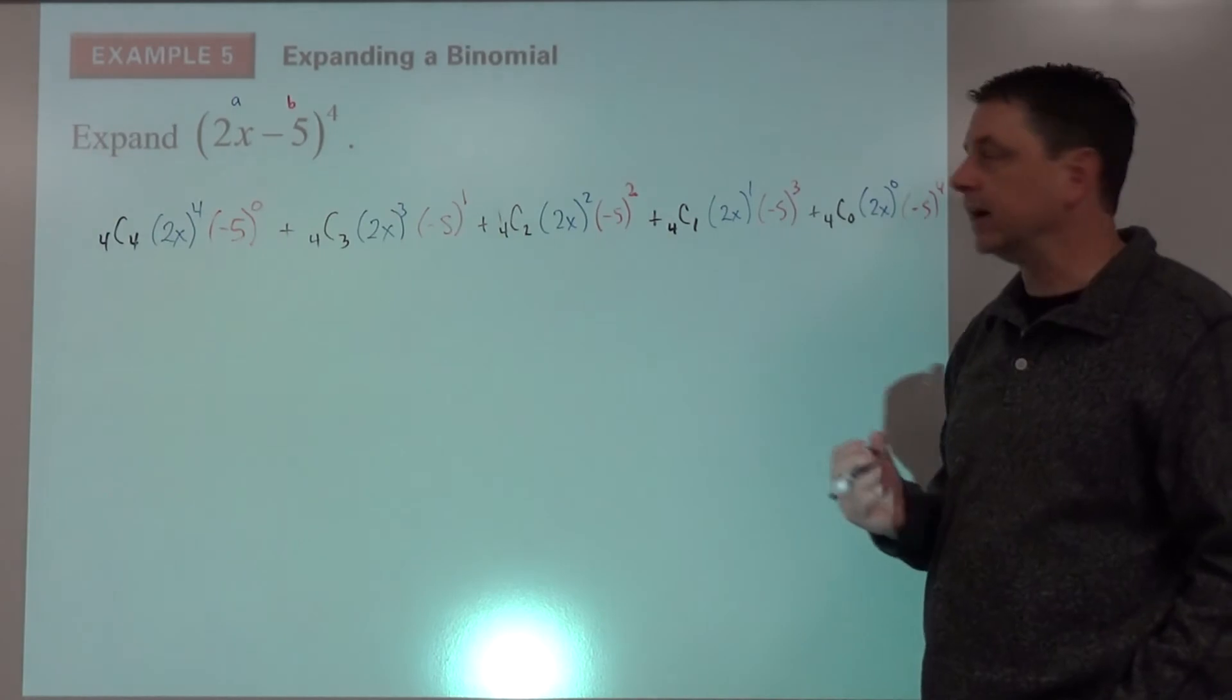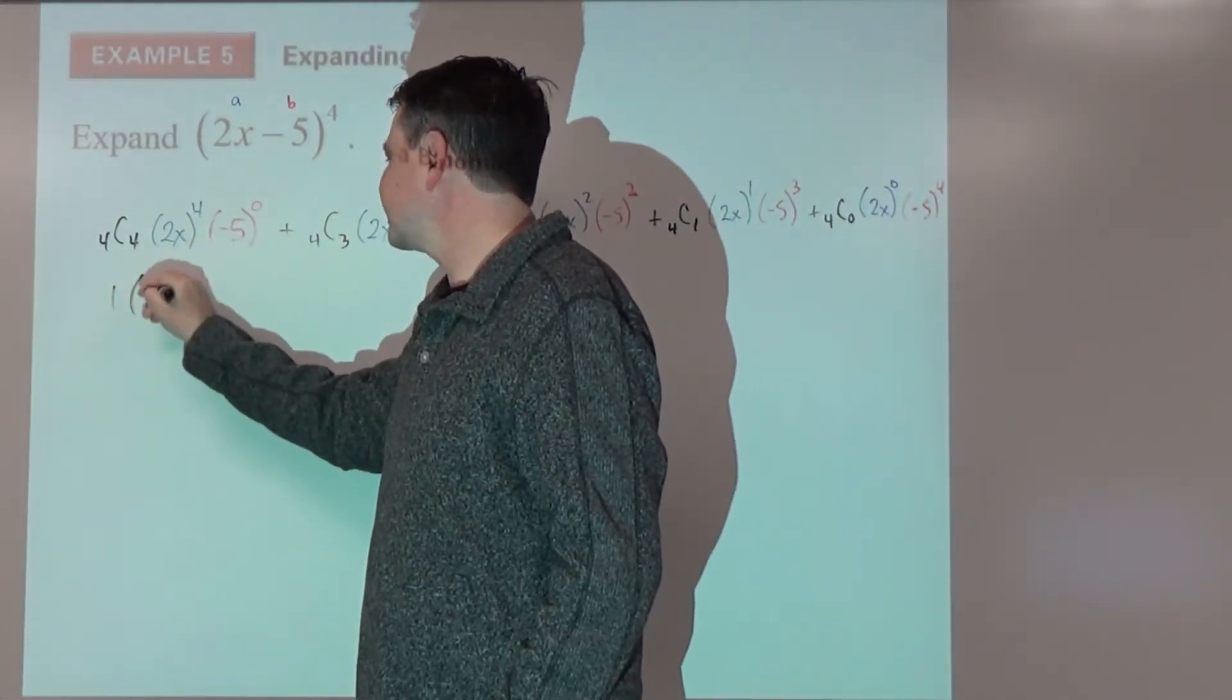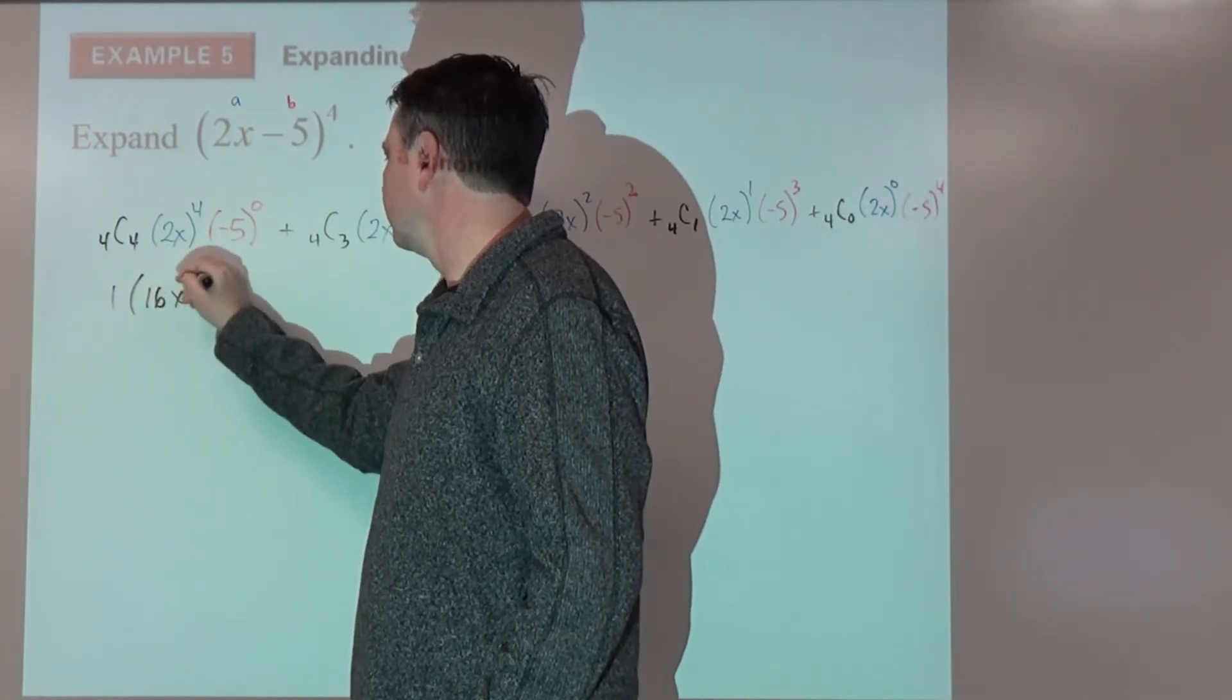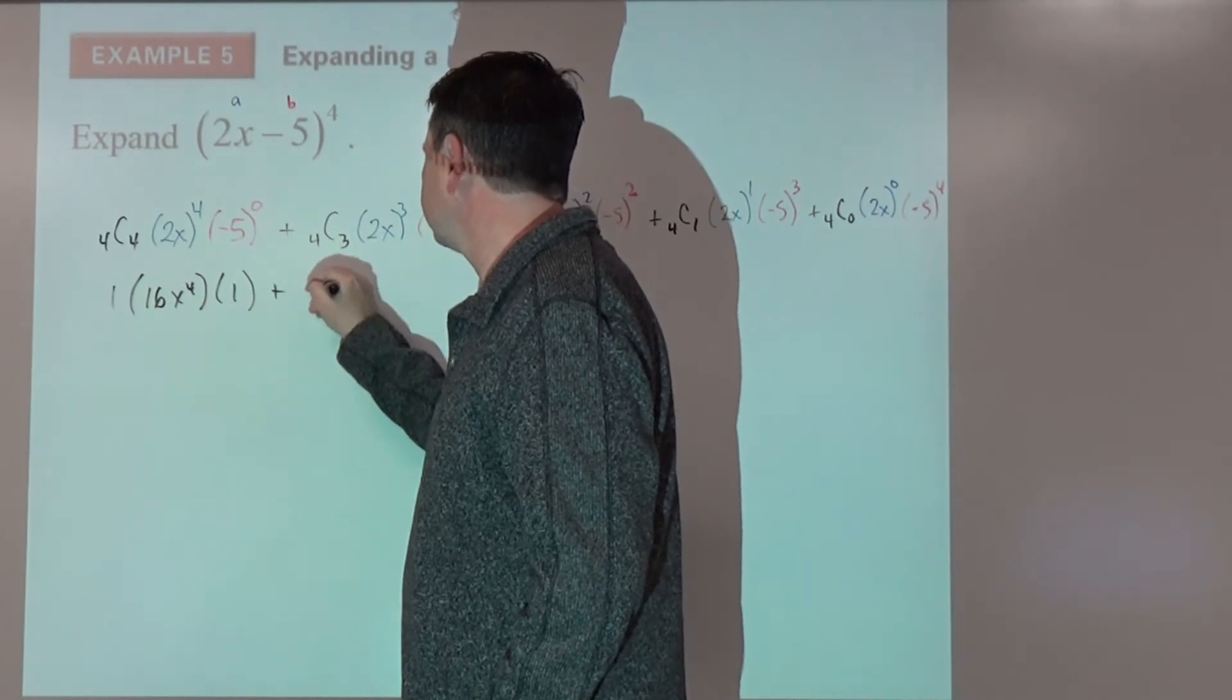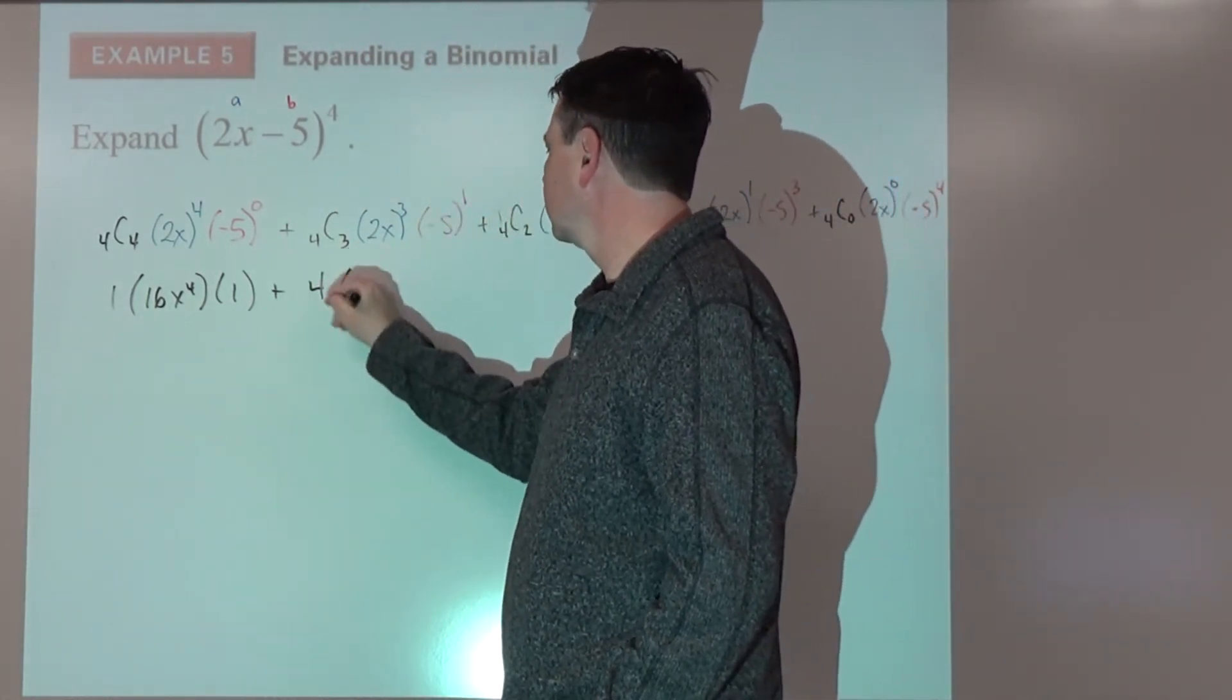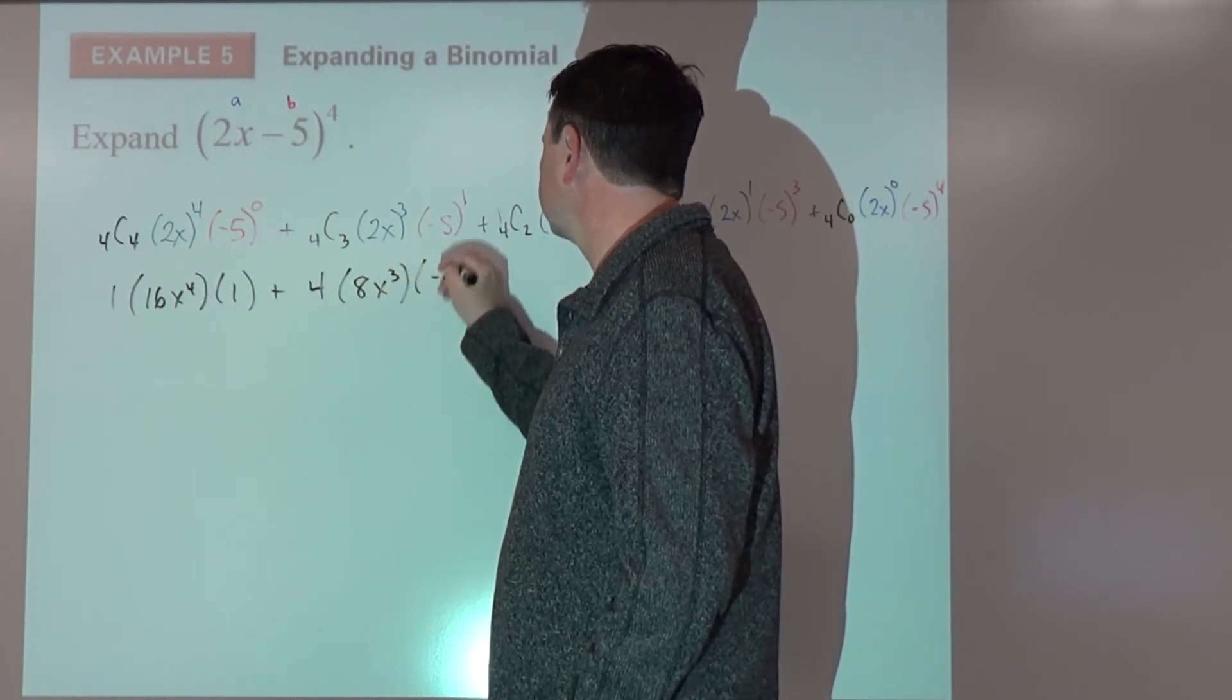Alright, let's simplify all of our terms. 1, 2 to the fourth power is 16x to the fourth, times 1, plus 4 choose 3 is 4, times 8x cubed, times negative 5.